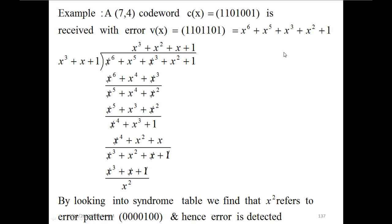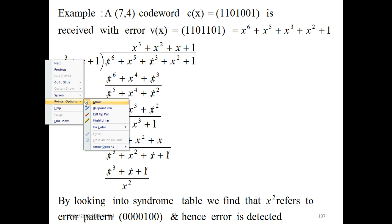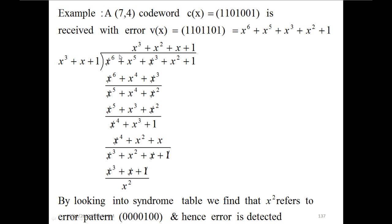The received term v(x) is divided by the generator polynomial. After division, x³ is multiplied by x³ to get x⁶. Then x³ is multiplied by x to give x⁴, and x³ is multiplied by 1 to give x³. The x⁶ terms cancel and the x³ terms cancel, leaving x⁵ + x⁴ + x².